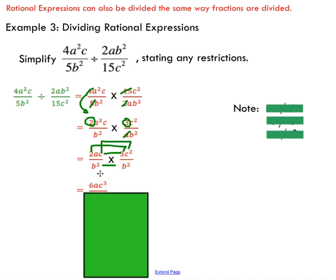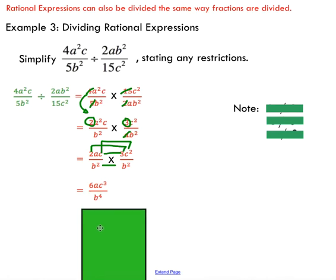So on top, I should have 6 times a times c cubed. On the bottom, I'm going to add my exponents because I'm multiplying. So I've got b to the power of 4. So that should be my simplified expression.